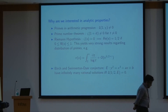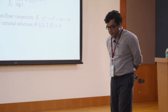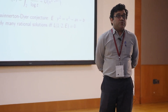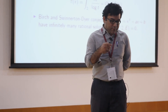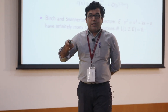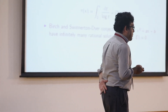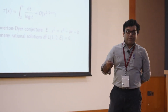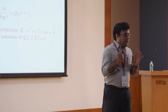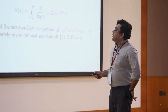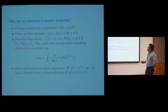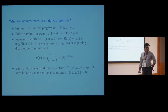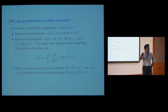Why are L-functions important in number theory? Dirichlet was the first to introduce L-functions into number theory. His aim was to show that there are infinitely many primes in arithmetic progressions. For example, starting with 1, 5, 9, 13, ... — adding 4 each time — the problem is to show there are infinitely many primes in that progression. For any progression with GCD 1, there should be infinitely many primes. Dirichlet showed that to prove this, you need to show that the L-function L(1, chi) is non-zero at s = 1, relating the number-theoretic problem to a property of the L-function.